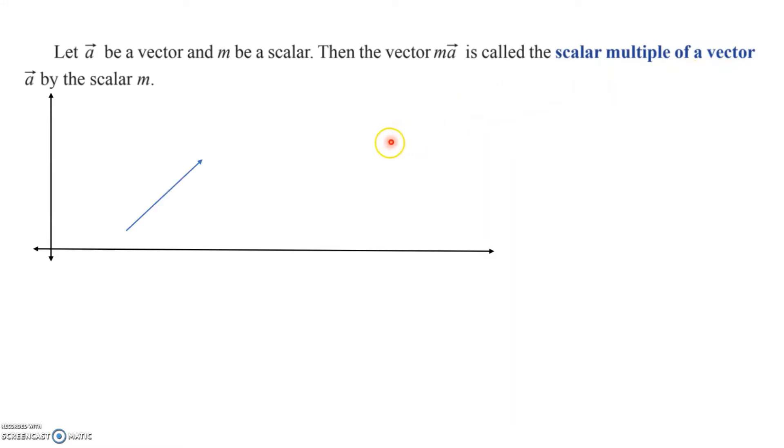Let's assume that this is our vector a. When I multiply this vector with m, the magnitude changes but the direction doesn't change. So this would be my resultant vector b which is m into a.